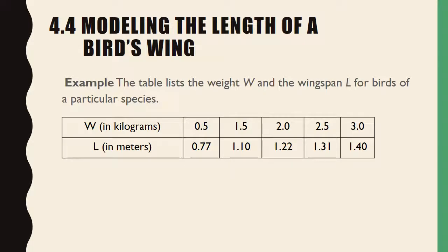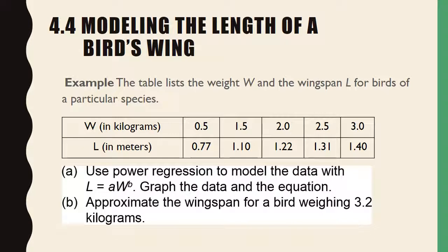Now we're going to do an example using the calculator with power regression. You have a table listing the weight W and wingspan L for birds of a particular species. Use the power regression feature on your calculator to model the data in the form L equals A times W to the B. Graph the data and the equation, then approximate the wingspan for a bird weighing 3.2 kilograms.